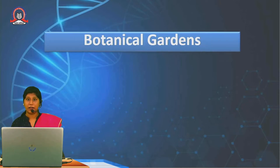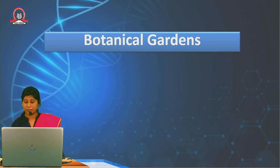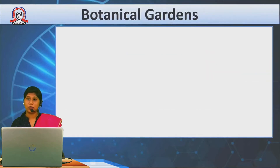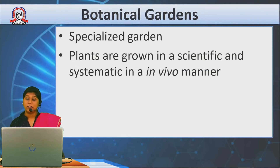Let's start with botanical gardens. Botanical gardens — we all know what gardens are, we all visit gardens. So what is a botanical garden? Here, gardens are scientifically arranged and managed. These are specialized gardens, meaning plants here are properly and scientifically maintained.